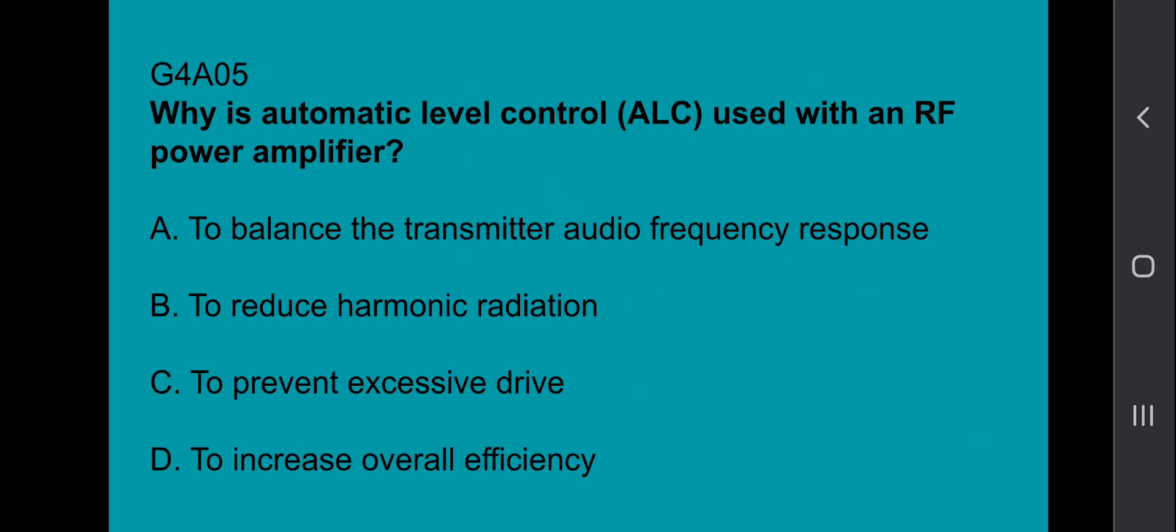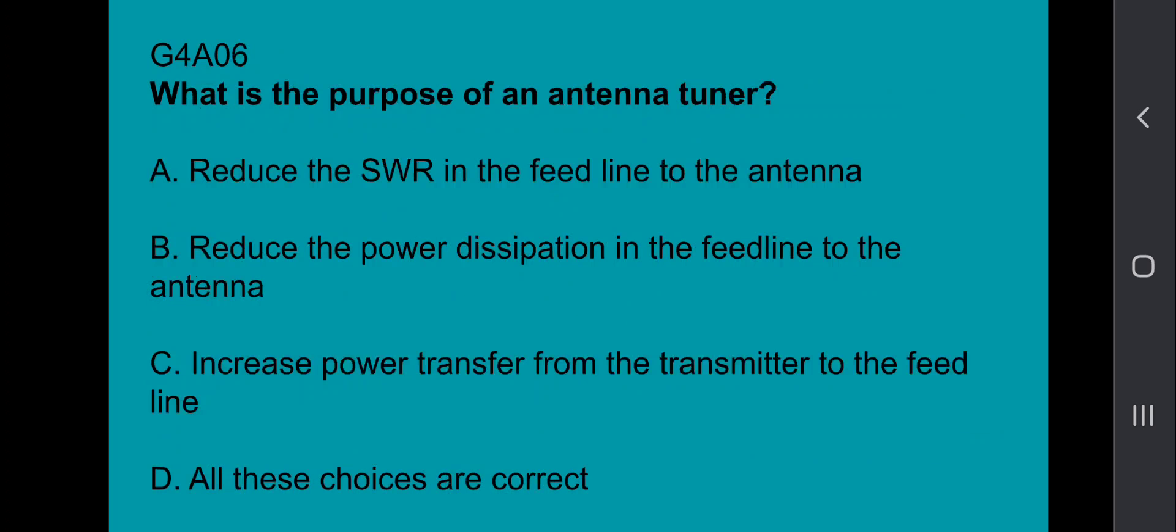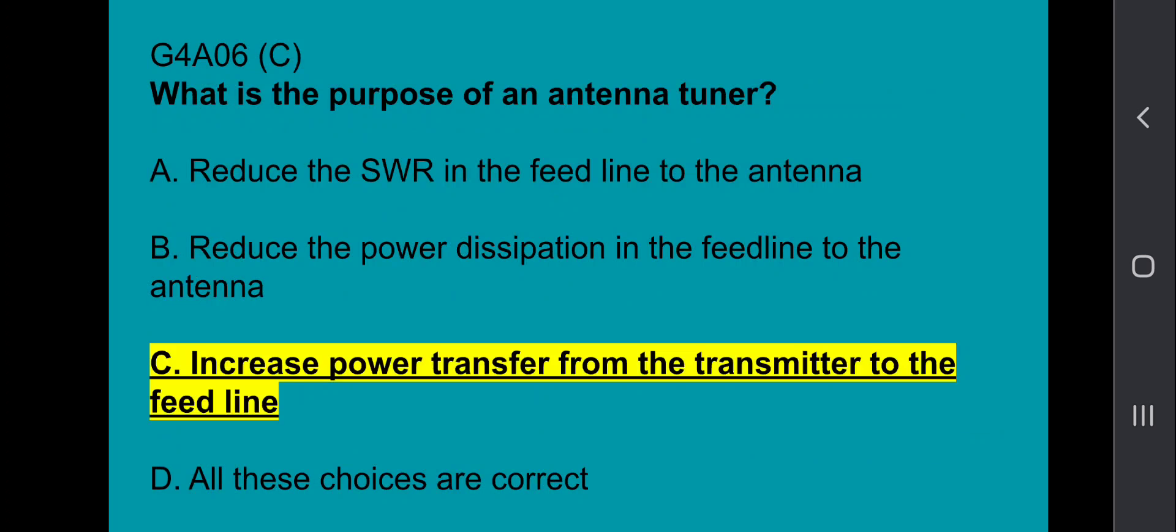G4A05, why is automatic level control, also known as ALC, used with an RF power amplifier? That's to prevent excessive drive. G4A06, what is the purpose of an antenna tuner? And that increases power transfer from the transmitter to the feed line.